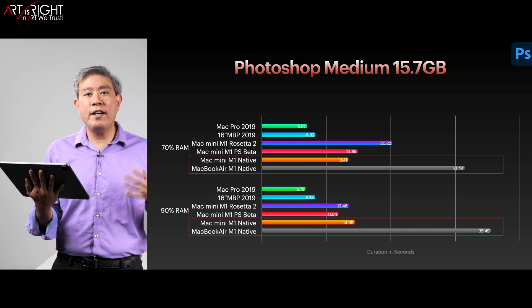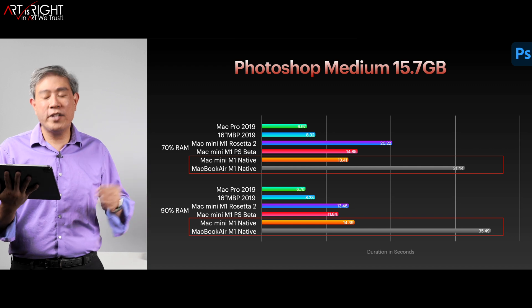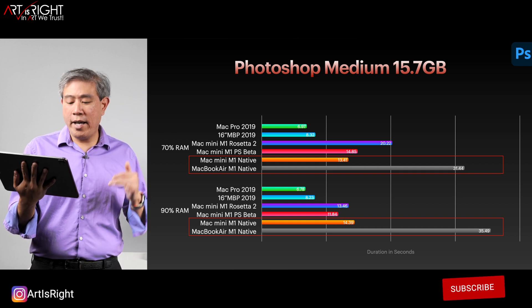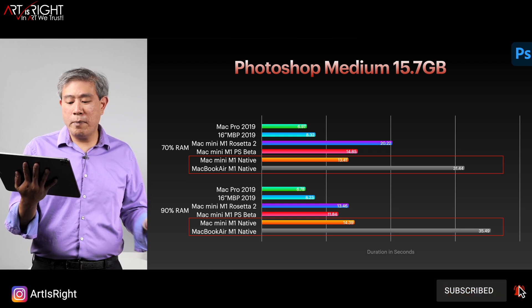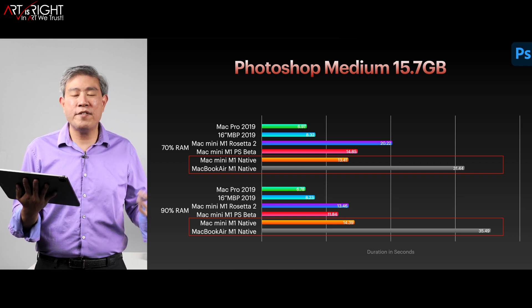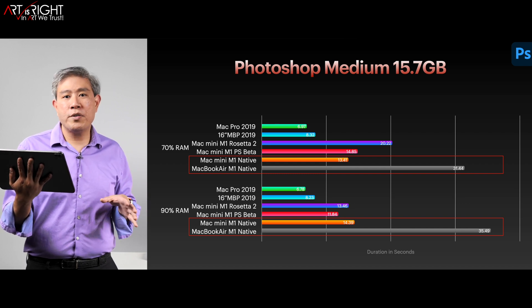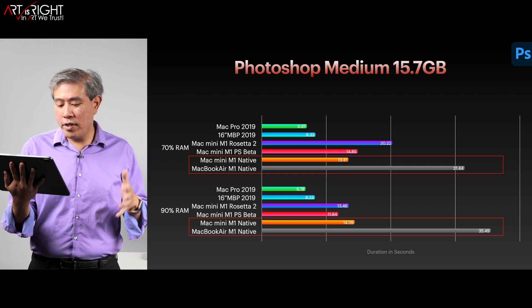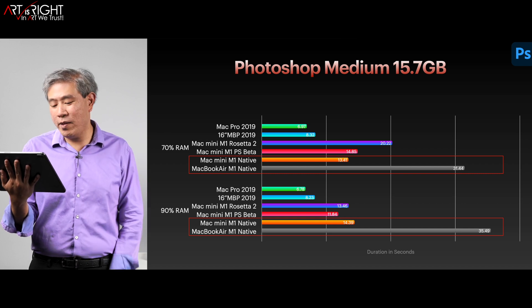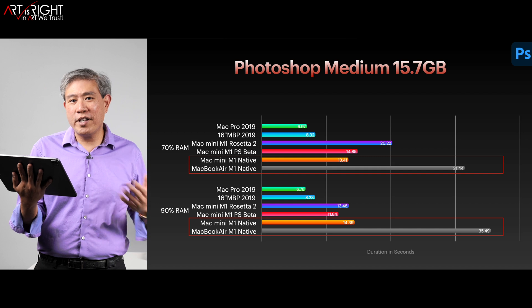The next test is Photoshop Medium, creating a file that is 15.7GB. Here you can see that Intel machines with more memory take a lot less time with large files. Comparing the Mac Mini results across Rosetta 2, beta, and native at 70%, there is a time improvement, but the MacBook Air takes a very long time. The MacBook Air is definitely not the computer for pro users — I'd recommend going with a MacBook Pro instead since it has a fan and, again, bump it up to 16GB of memory. At 90% RAM on the Mac Mini, the native app does add slight improvement but interestingly didn't beat Rosetta 2. I ran many tests restarting the machine numerous times and results were consistent — within about a second or two, so likely margin of error.